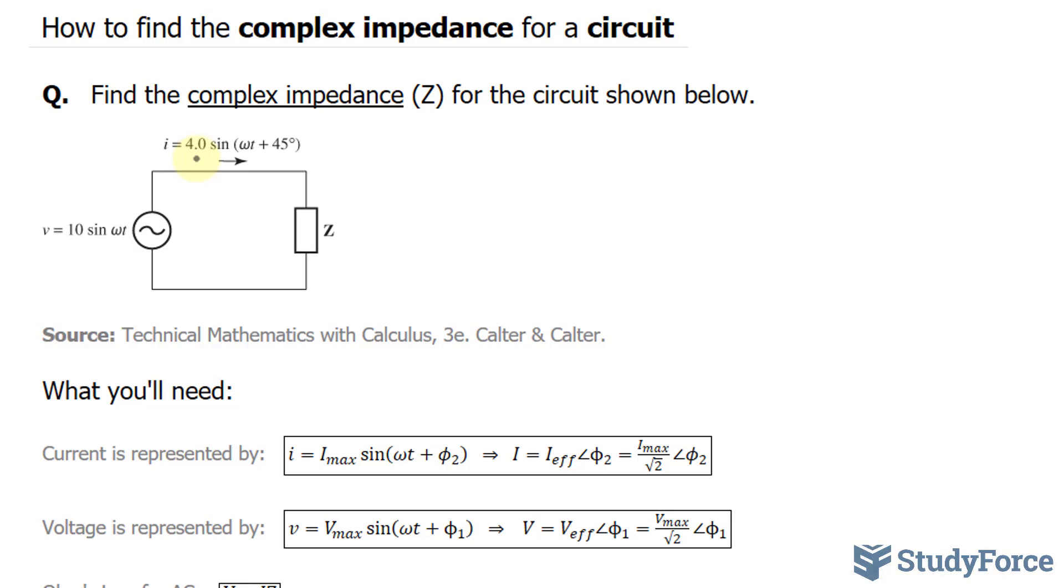The first thing I'll do is convert this sinusoidal equation into polar form. I'll use the amplitude of this equation, 4.0, as my Imax. Then take that number and divide it by the square root of 2 to get the effective current. Let's go ahead and do that.